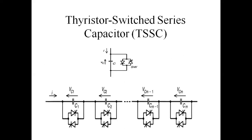Now I will explain TSSC — Thyristor Switched Series Capacitor. Here, T means Thyristor, S means Switch — the thyristor acts as a switch — and Series Capacitor. This is the simple diagram: a single thyristor, a single capacitor, and two anti-parallel thyristors. VC is the Voltage Across the Capacitor, and IE is the current flowing in the transmission line.